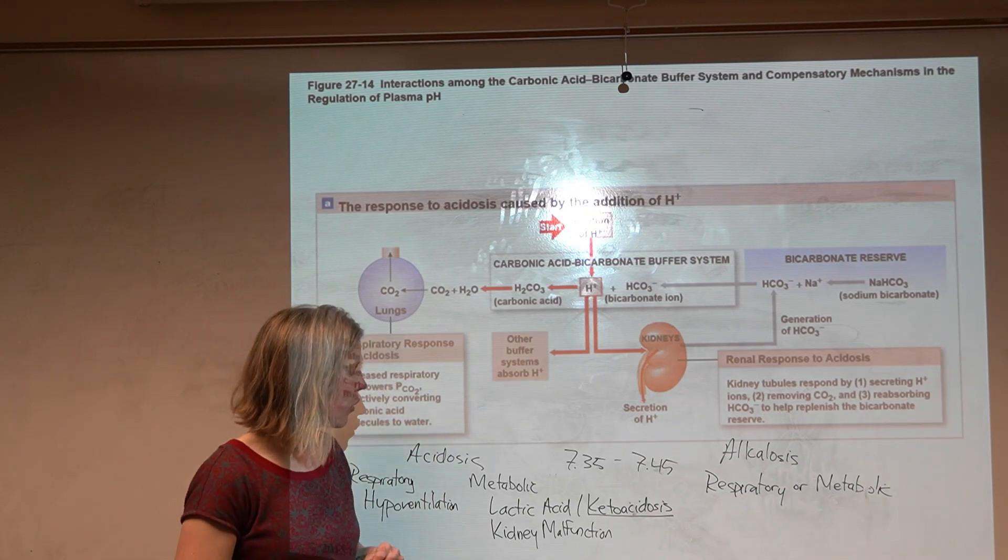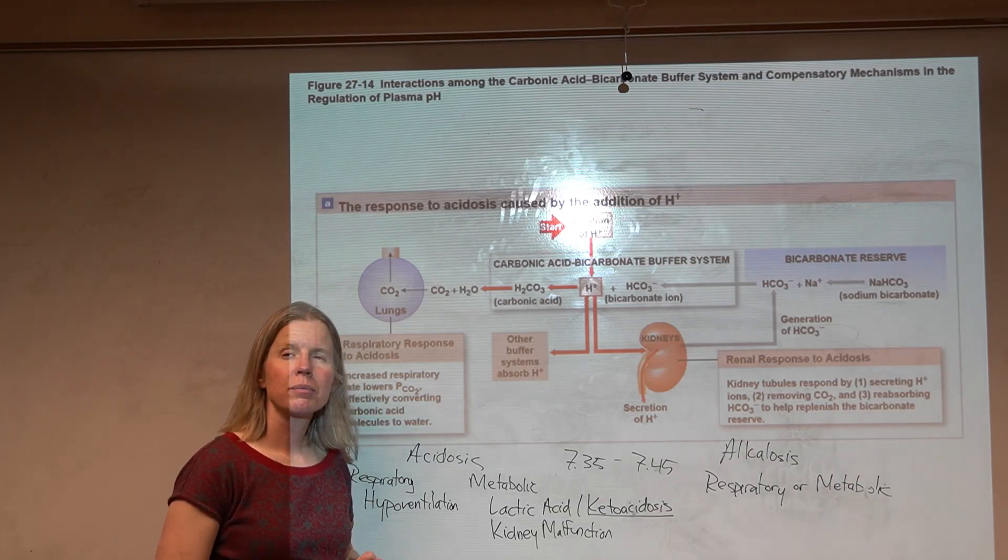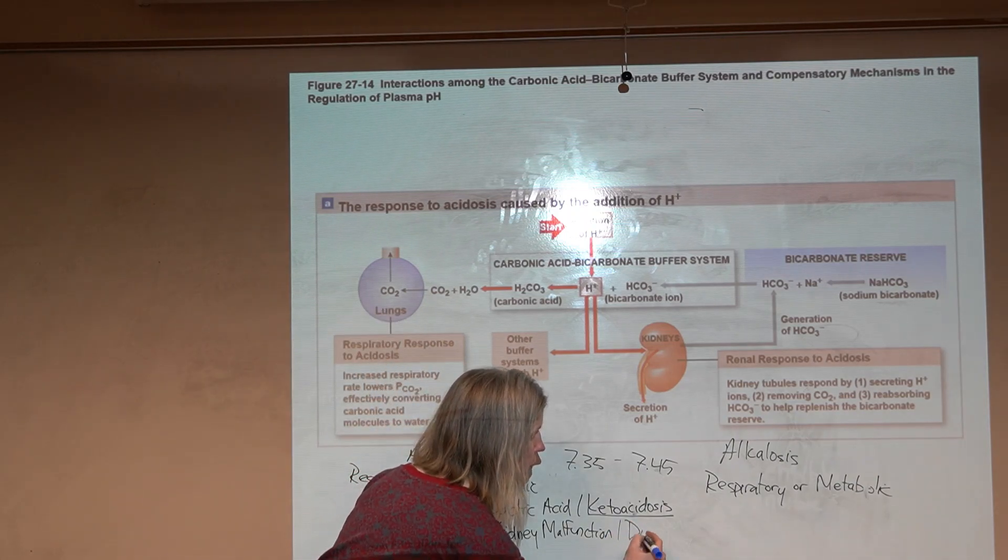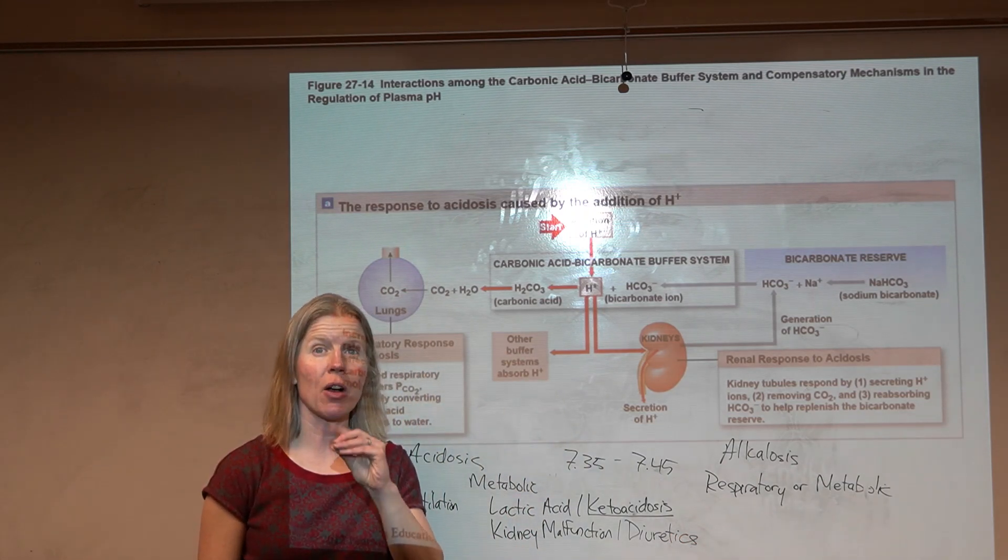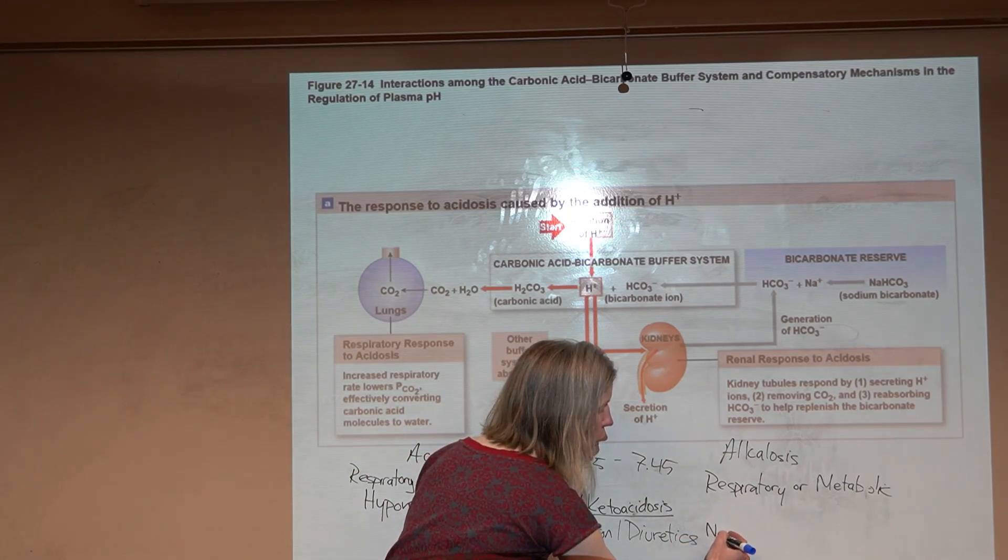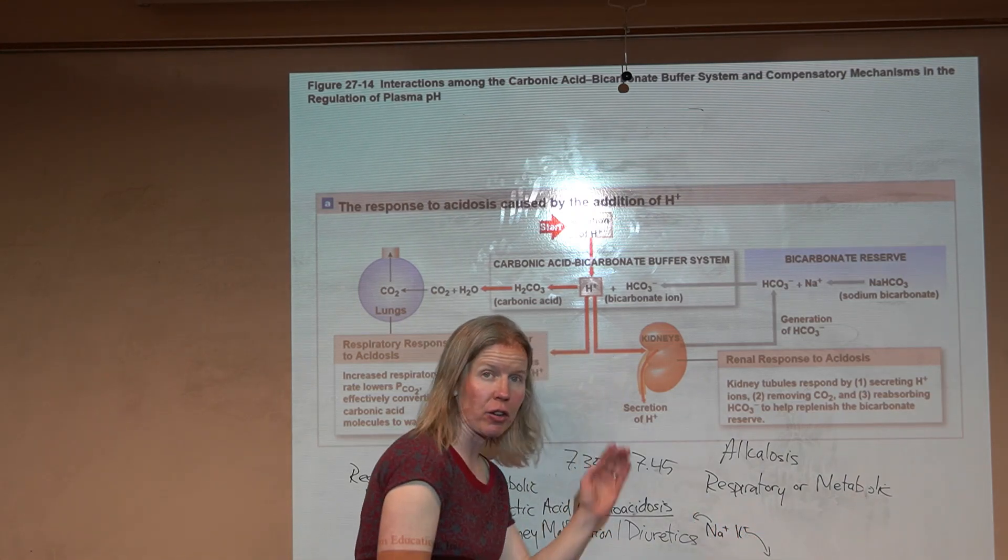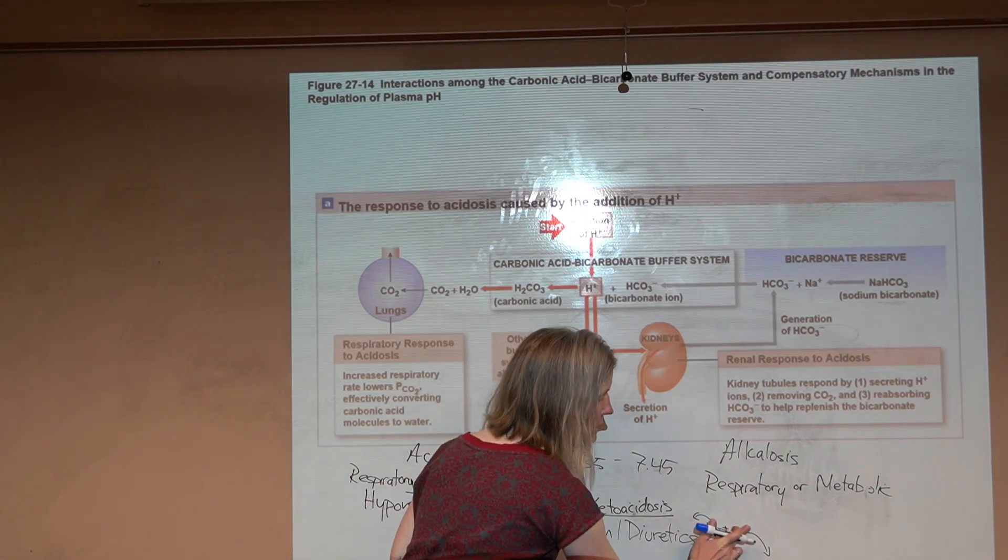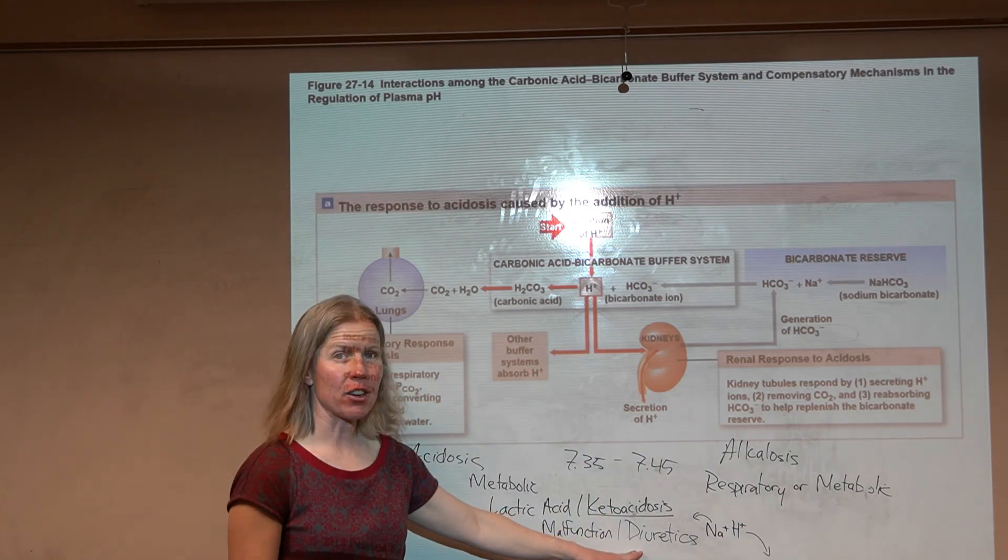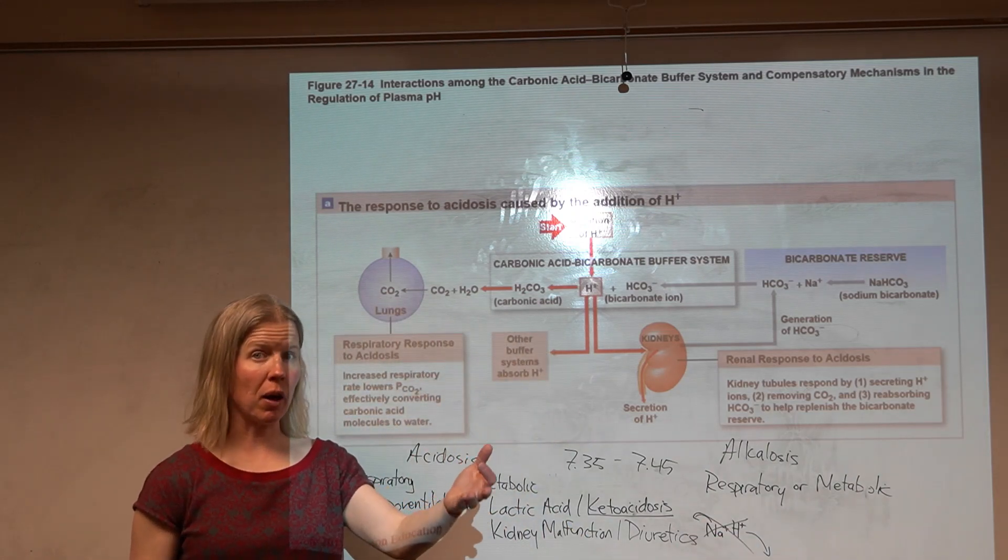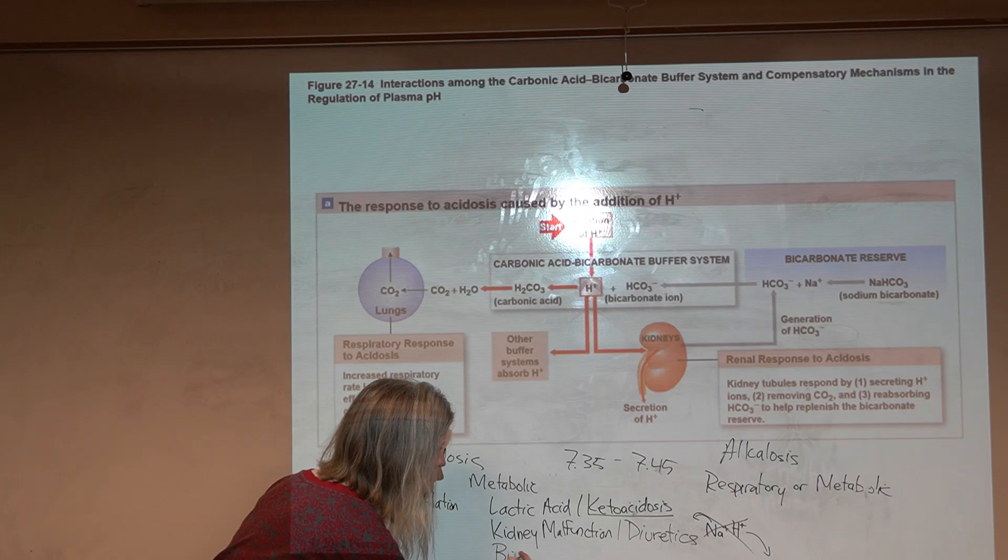Diuretics, particularly diuretics that are trying to oppose aldosterone. Remember with aldosterone we're usually reabsorbing sodium and often we do that in exchange for potassium. But if you have lots of acid, if you have a low blood pH, we'll do that exchange with hydrogen instead. But if you're on that diuretic, it shuts off that ability to expel those hydrogen ions.